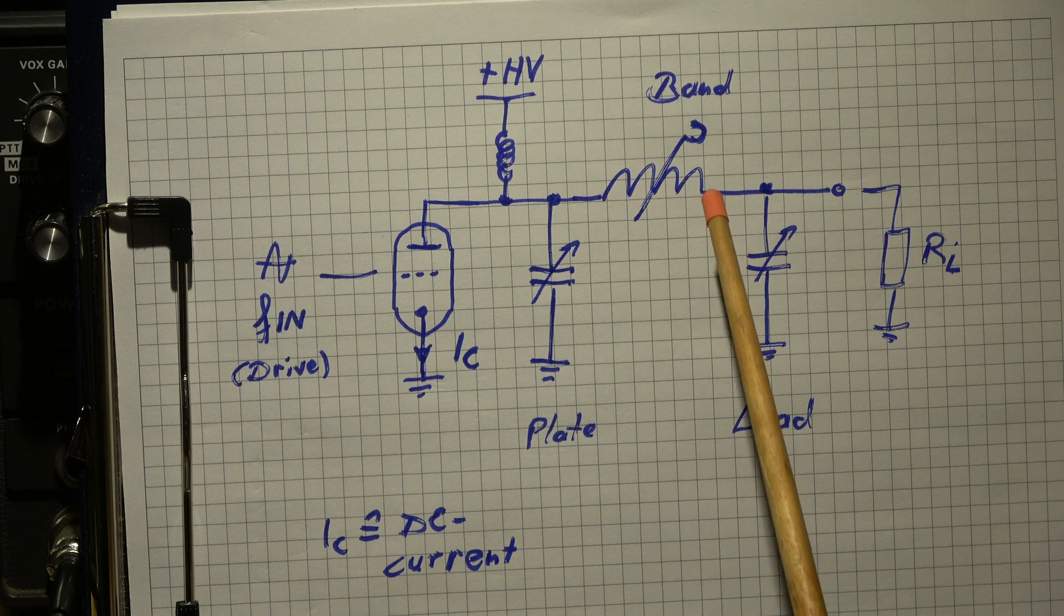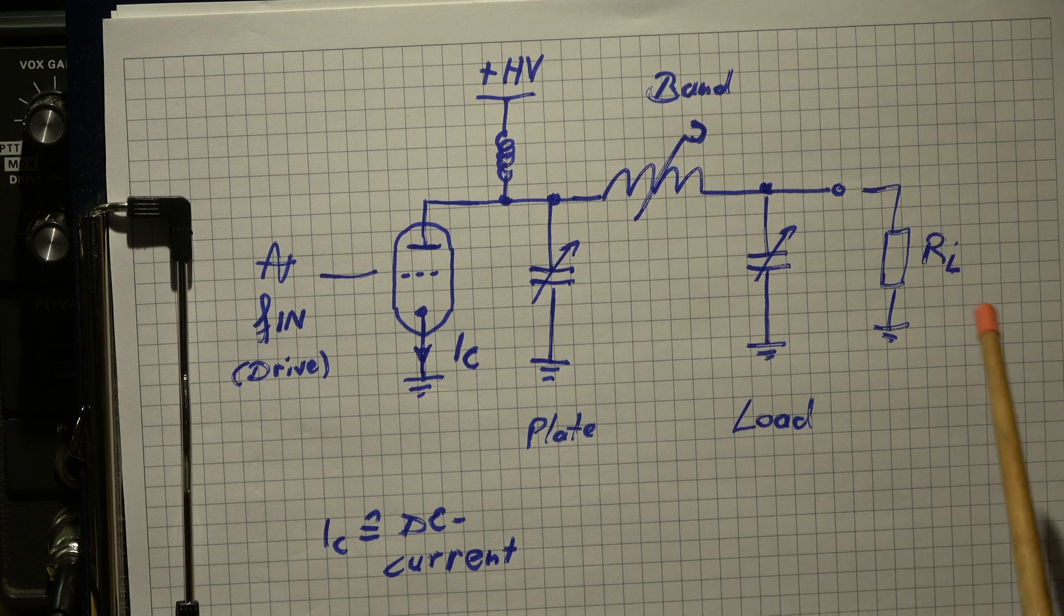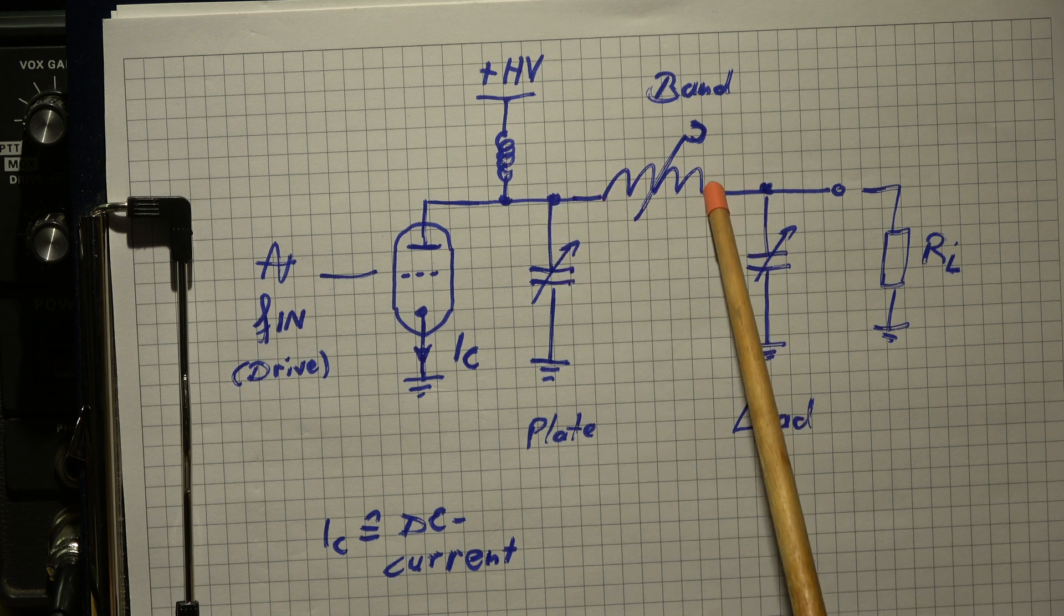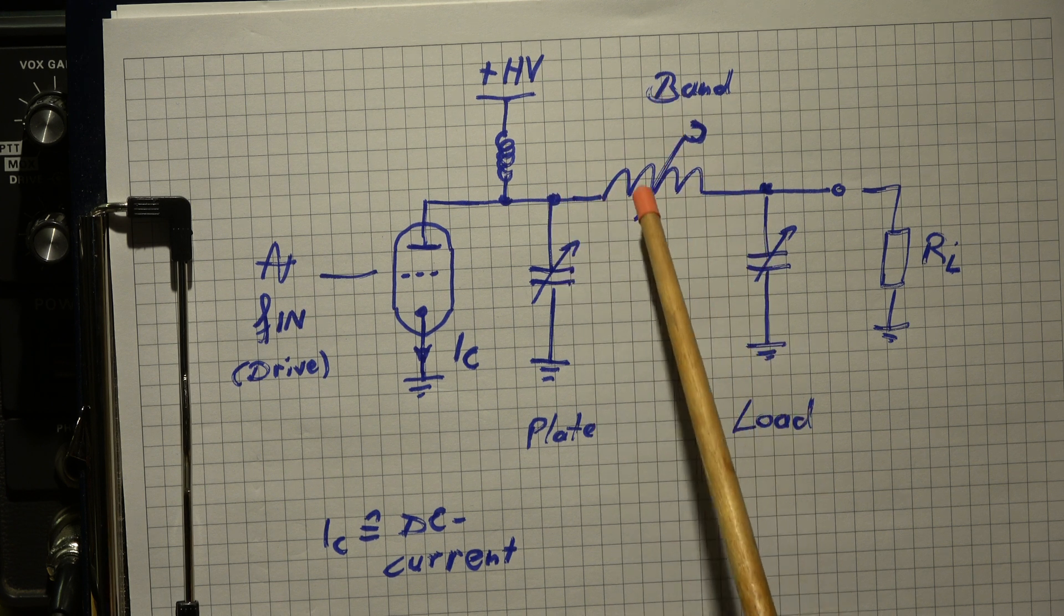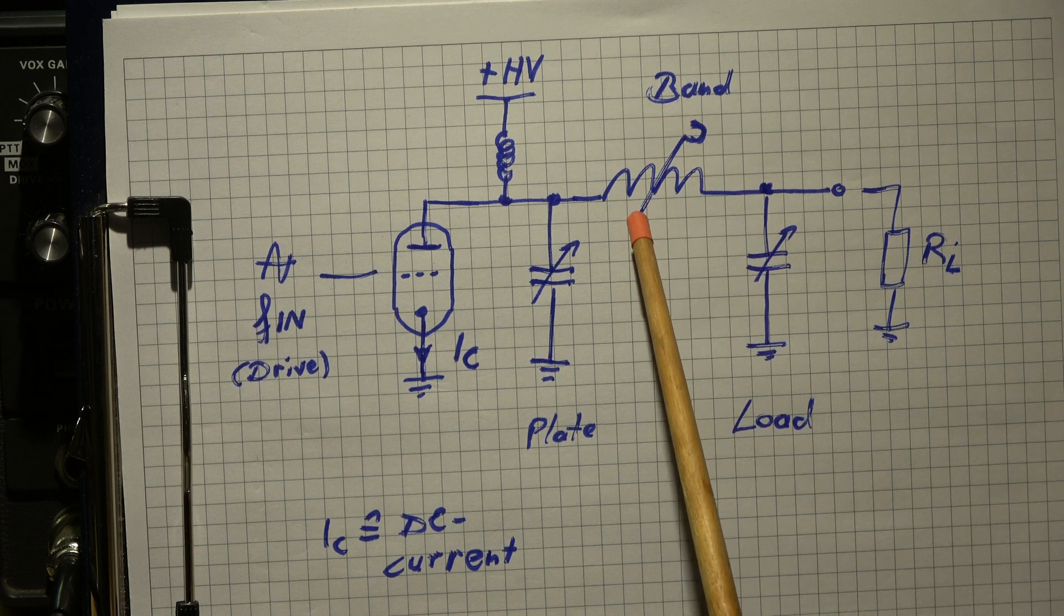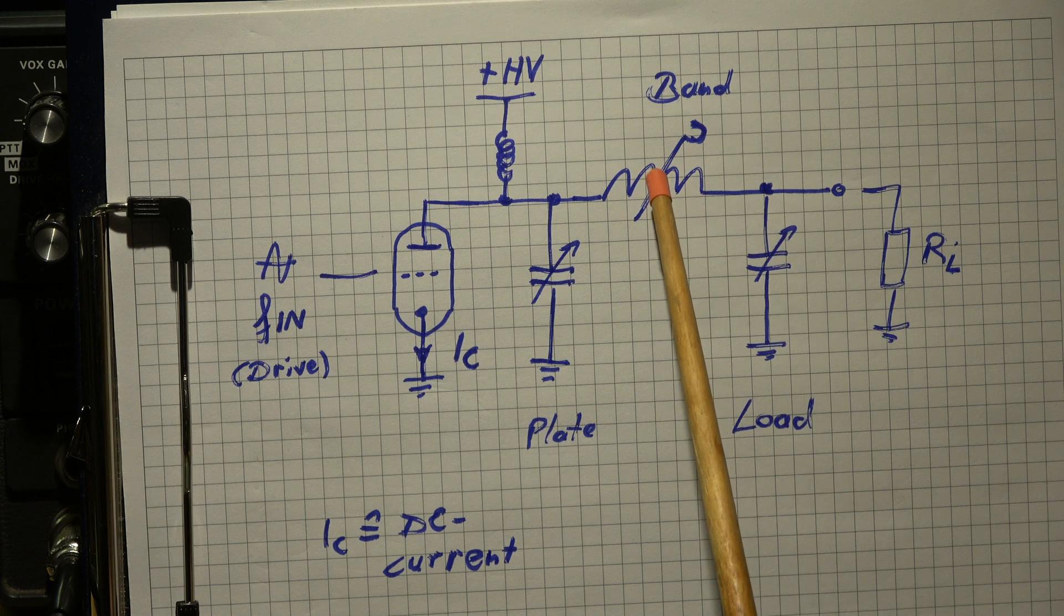This inductivity is switched with a band switch. When you set it to 3.5 megahertz there are more turns on it than when we set it to the 10 meter band, 28 megahertz. This is a coarse tuning or coarse alignment of the circuit.